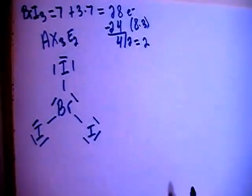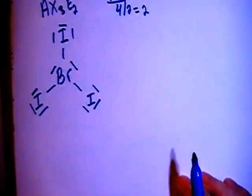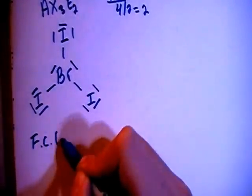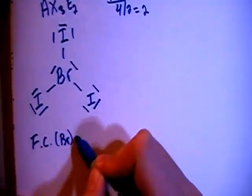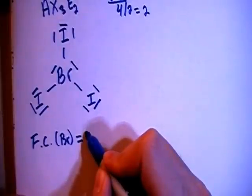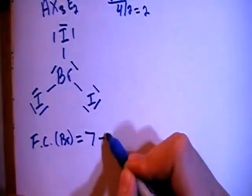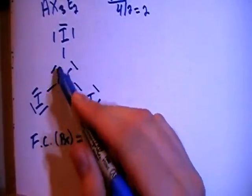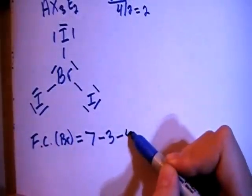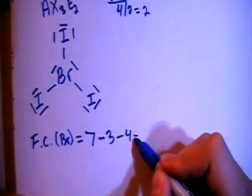But let's go ahead and verify that by checking the formal charges. So the formal charge on the central bromine is going to be equal to the 7 valence electrons brought in, minus the 3 bonds, 1, 2, 3, minus 1, 2, 3, 4 non-bonding electrons for a formal charge of 0.